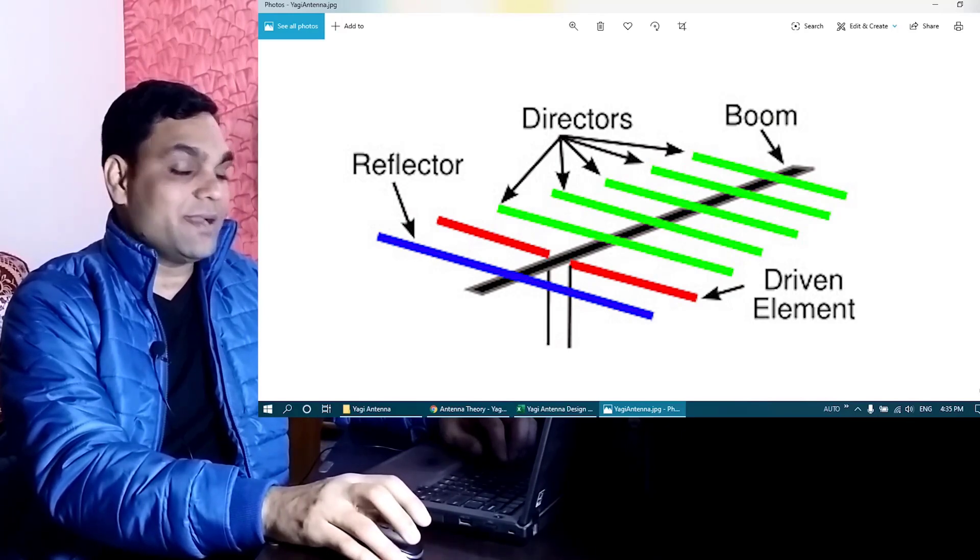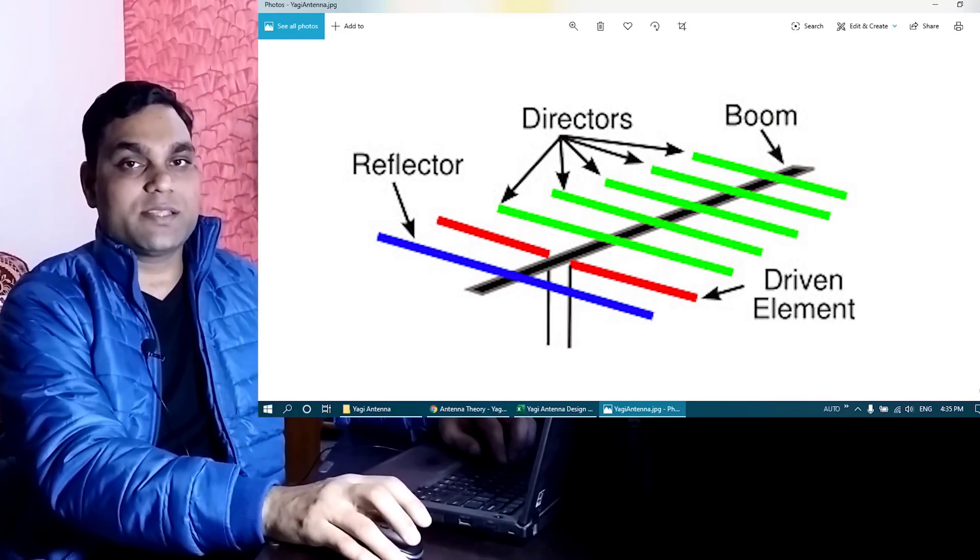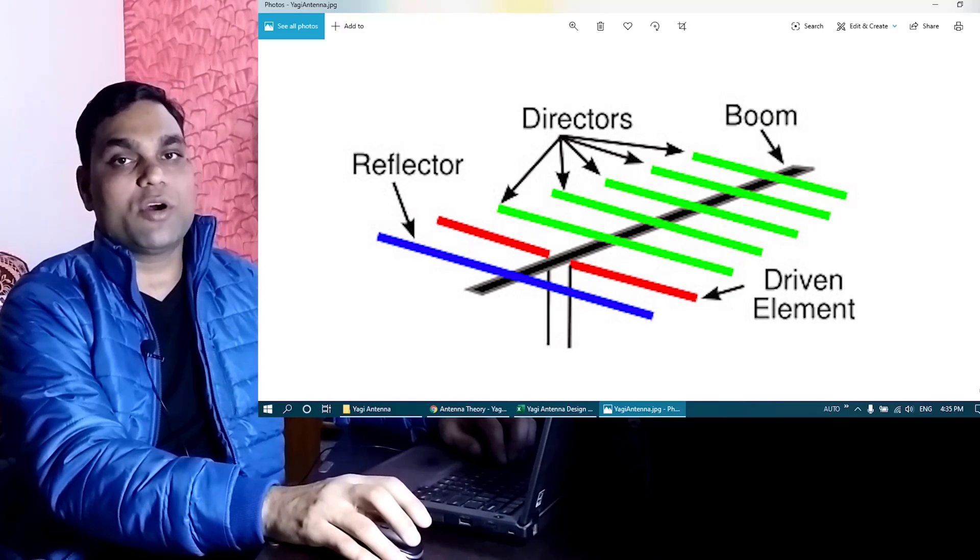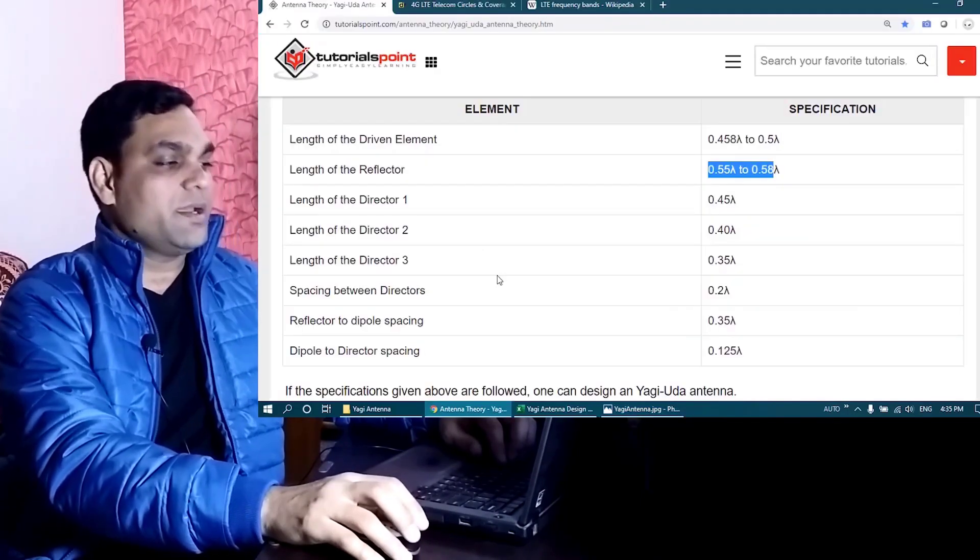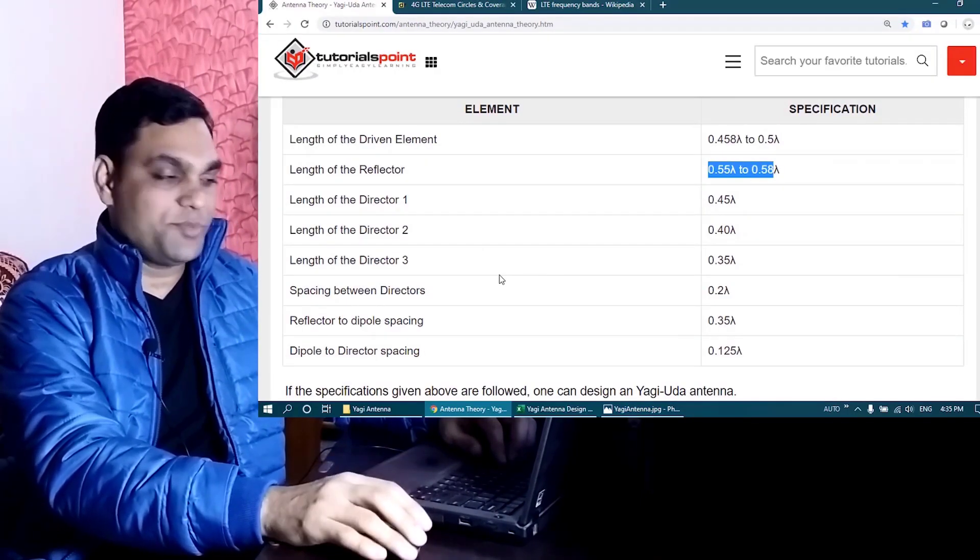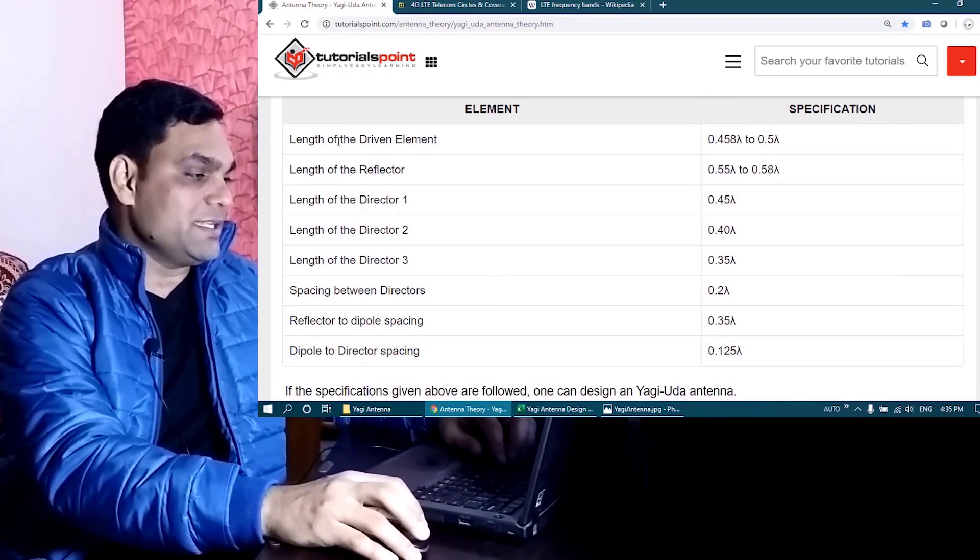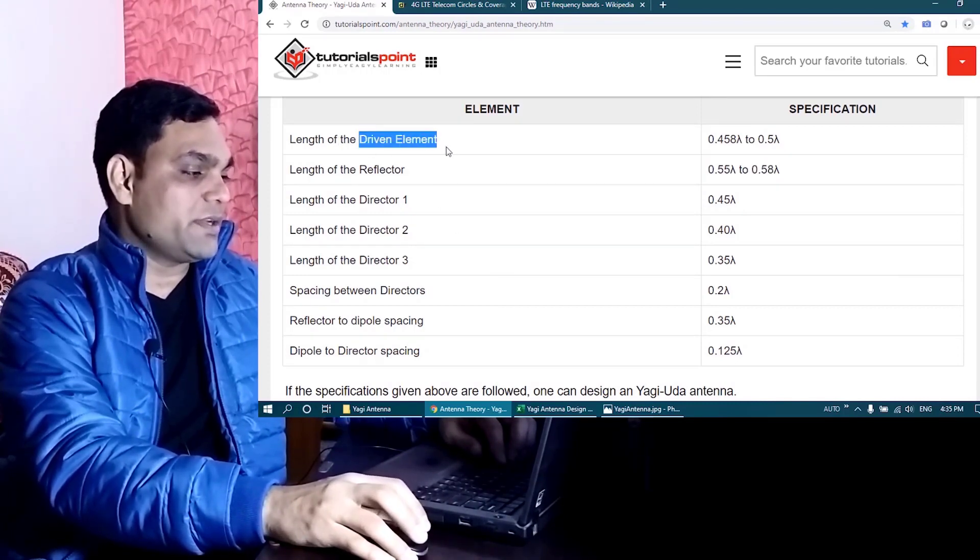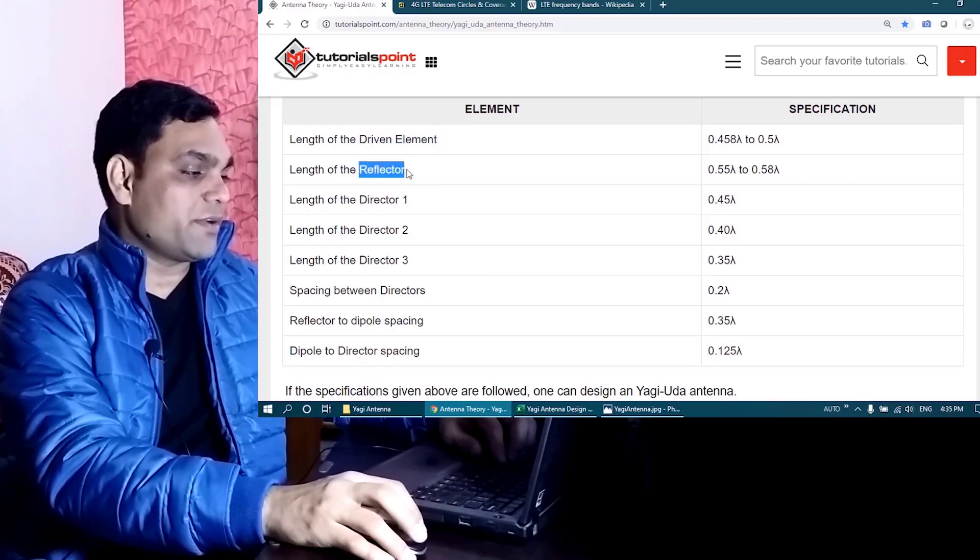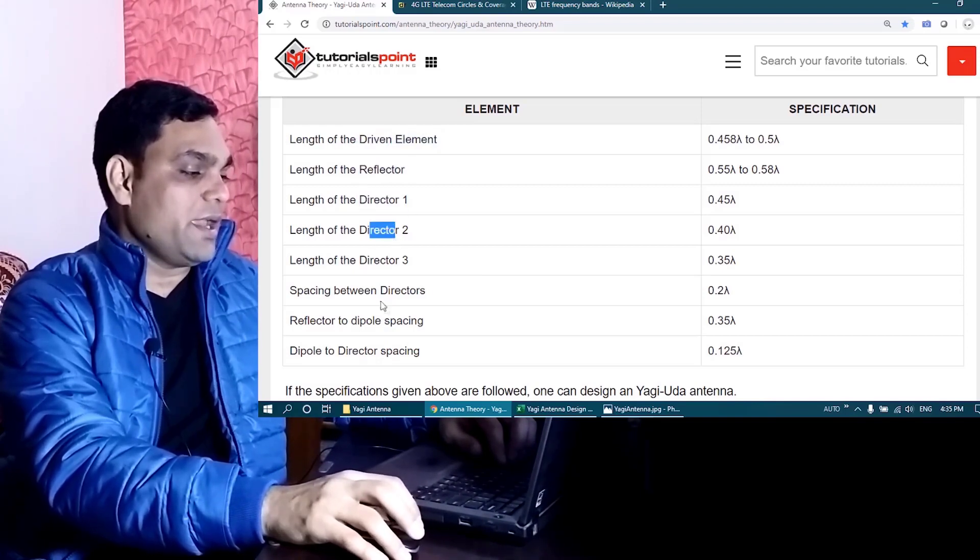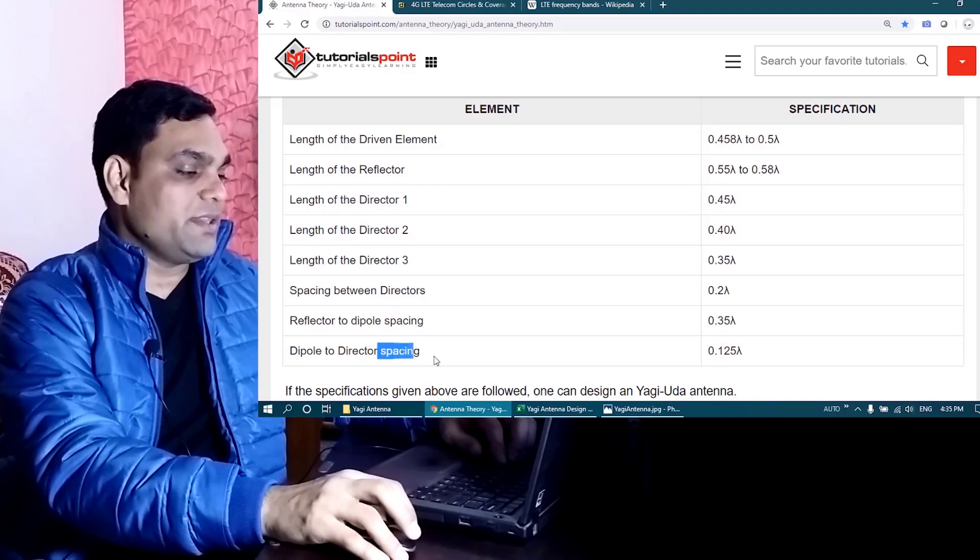Now the size and separation between these elements is something which is governed by the frequency or the wavelength. At this link which is given in the description you can find out the calculations. It tells you what should be the length of the driven element, what should be the length of reflector and the directors, and what should be the spacing between these elements.